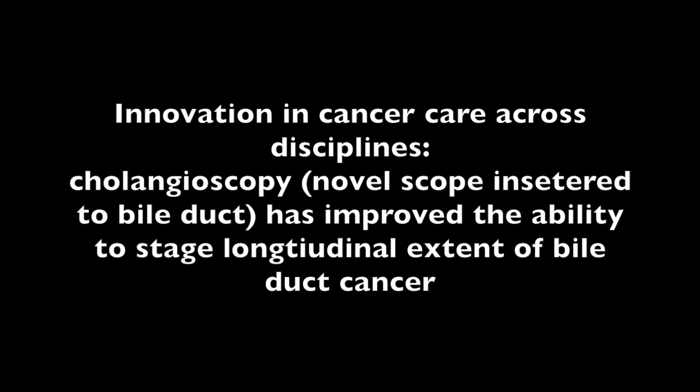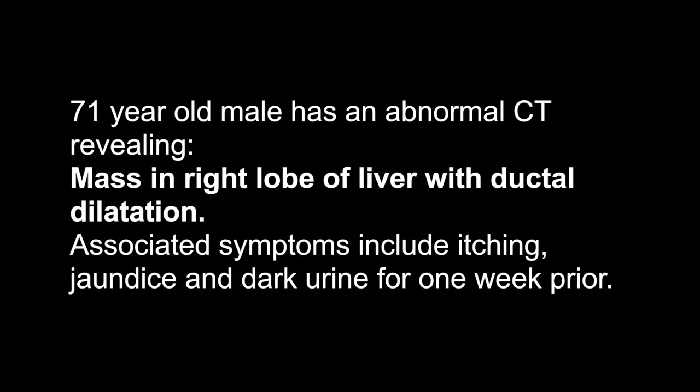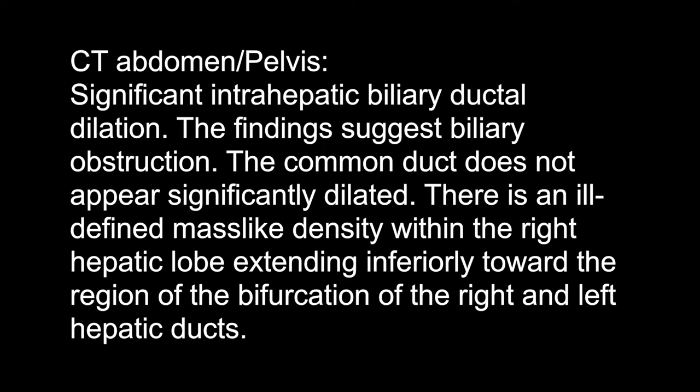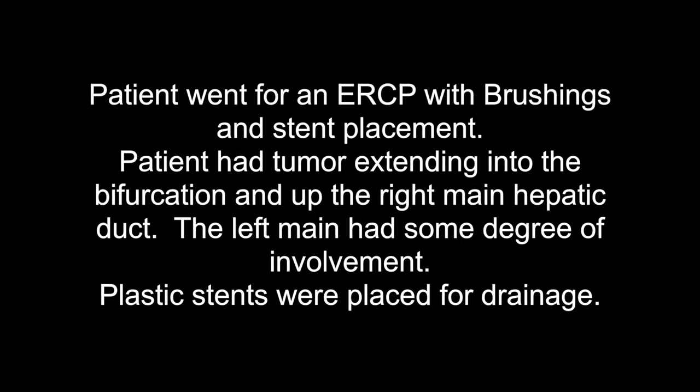A 71-year-old with an abnormal CT scan revealed a mass in the right lobe of the liver with ductal dilation. Associated symptoms included itching, jaundice, and dark urine for one week prior. Further detailed evaluation of the CT scan showed ductal dilation in the right and left intrahepatic segments. The common duct did not appear significantly dilated, and there was a mass-like density in the right lobe of the liver that extended inferiorly to the bifurcation.